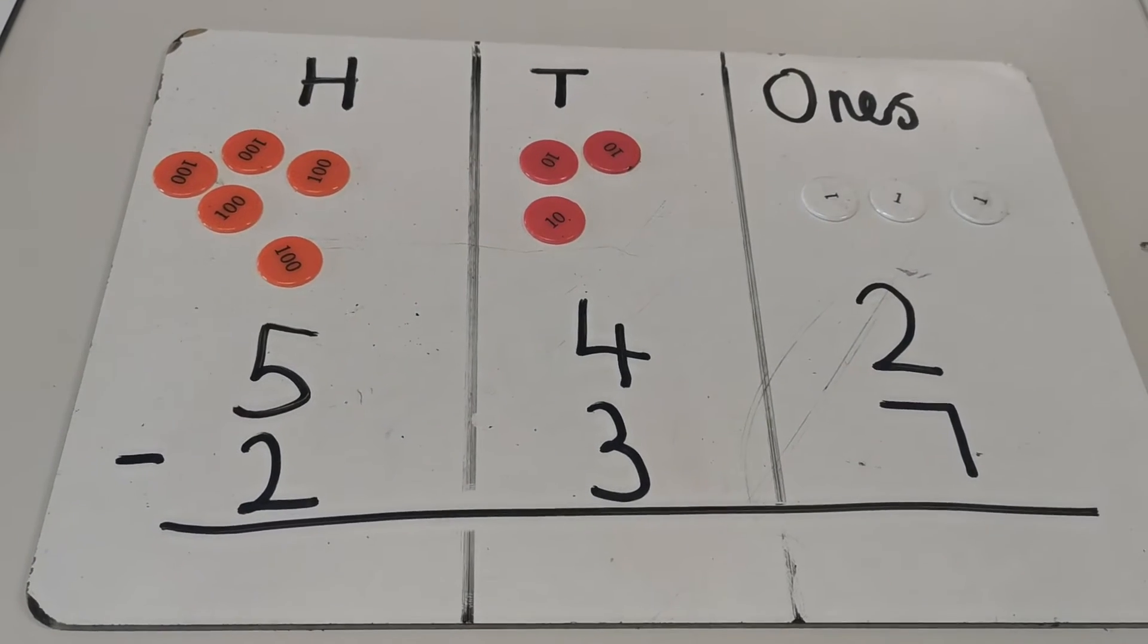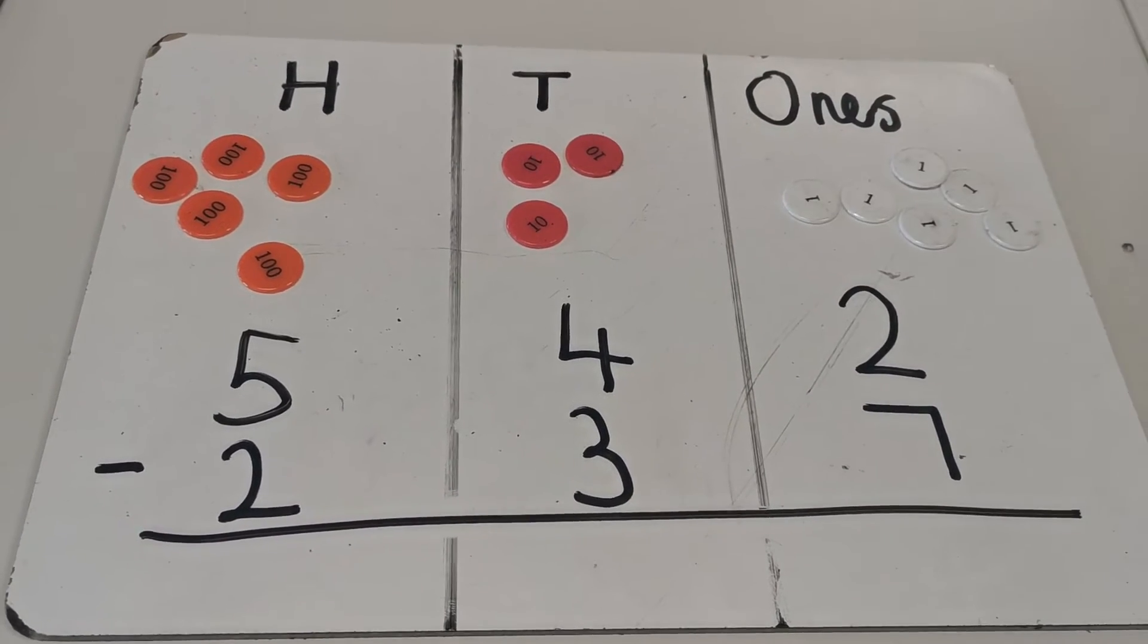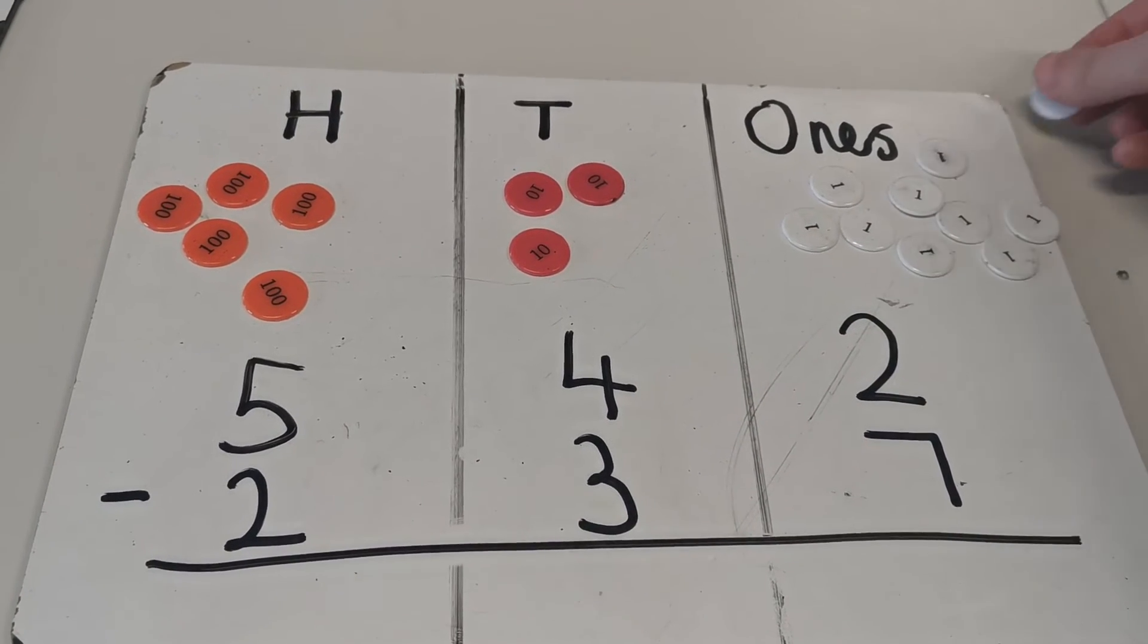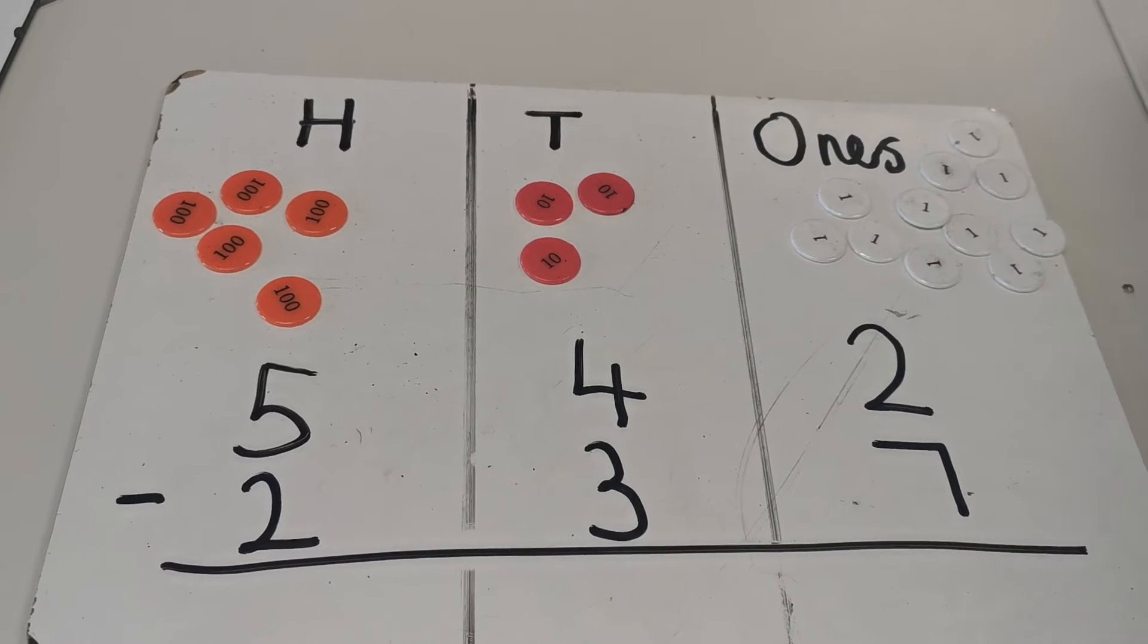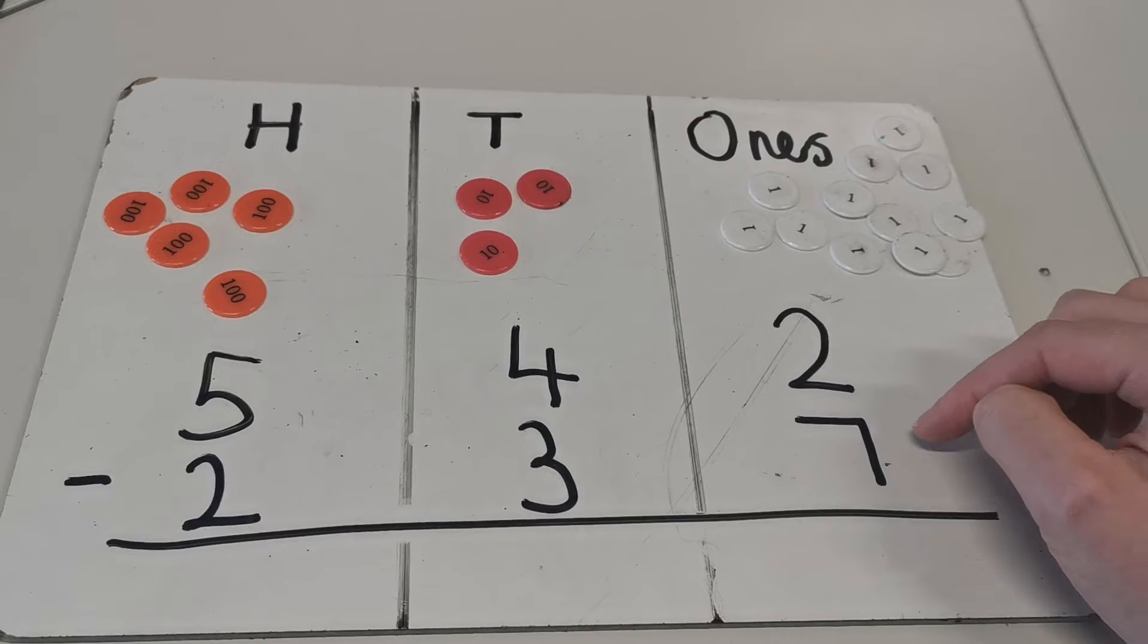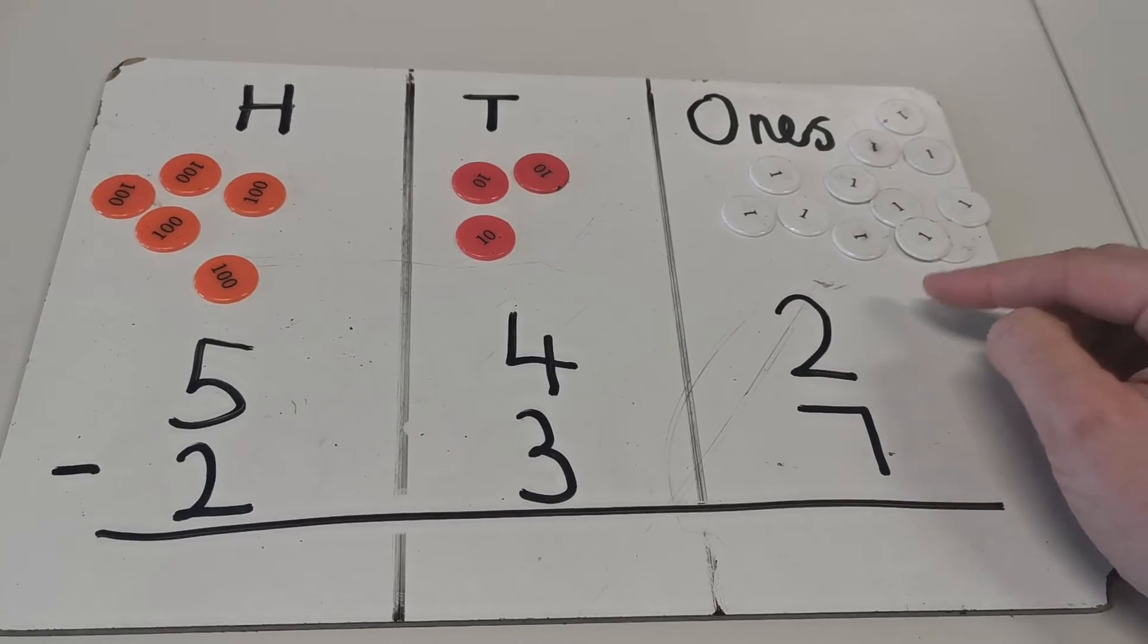So I had two ones and now I've got ten more, so now I can subtract seven away from twelve because two and ten makes twelve.